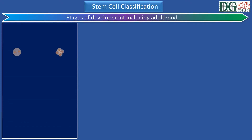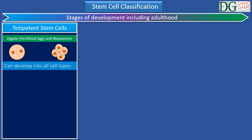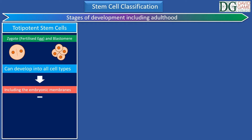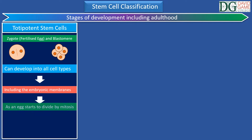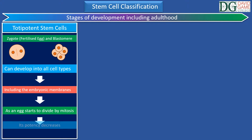A fertilized egg is totipotent, as it can develop into all cell types, including the embryonic membranes. As an egg starts to divide by mitosis, it quickly loses its ability to develop into all cell types.